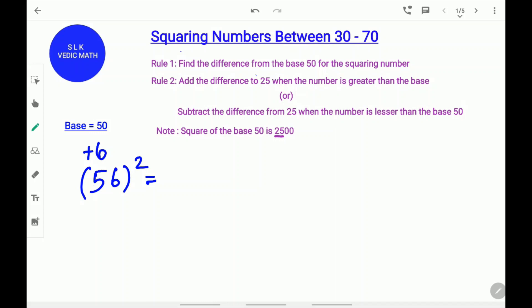So, now add 25 plus 6. 25 plus 6 is 31. Write 31. Next, we need to find the next two digits.